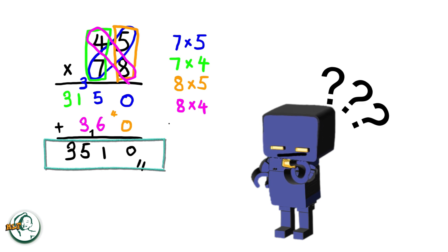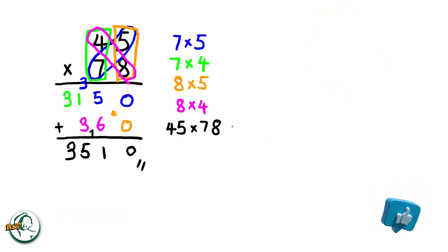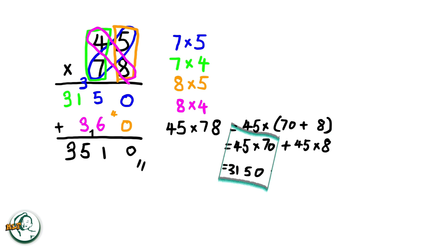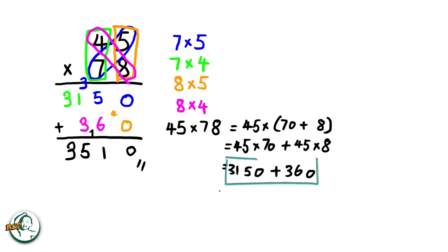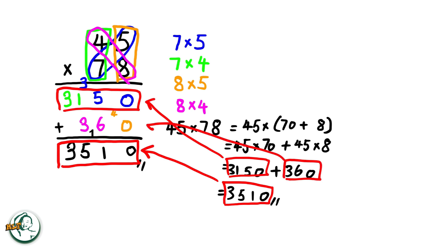Let's dive into the rationale behind this method. Consider 78 as 70 plus 8. We can express 45 times 78 as 45 times (70 plus 8). This expands into 45 times 70 plus 45 times 8. Calculating, we get 3150 for 45 times 70, and 360 for 45 times 8. Adding these results together, 3150 plus 360 equals 3510. This explains why we need to add these two numbers here in the column method.